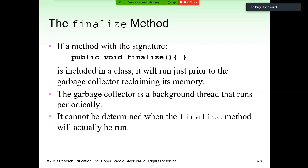The finalize method: if a method with the signature public void finalize() is included in a class, it will run just prior to the garbage collector claiming its memory. The garbage collector is a background thread that runs periodically, so it cannot be determined exactly when the finalize method will actually be executed.